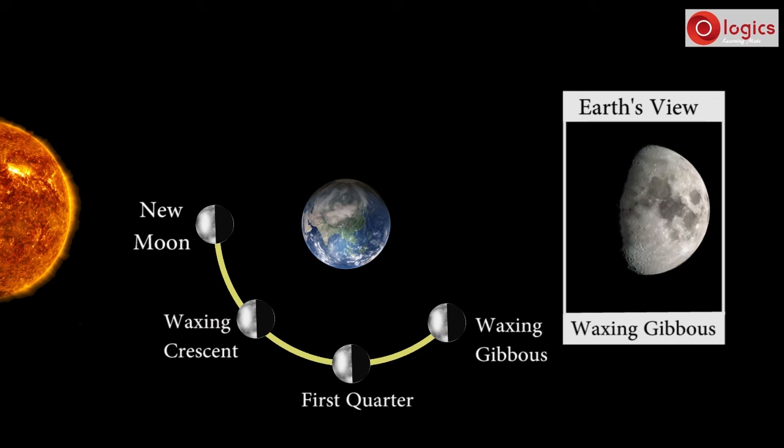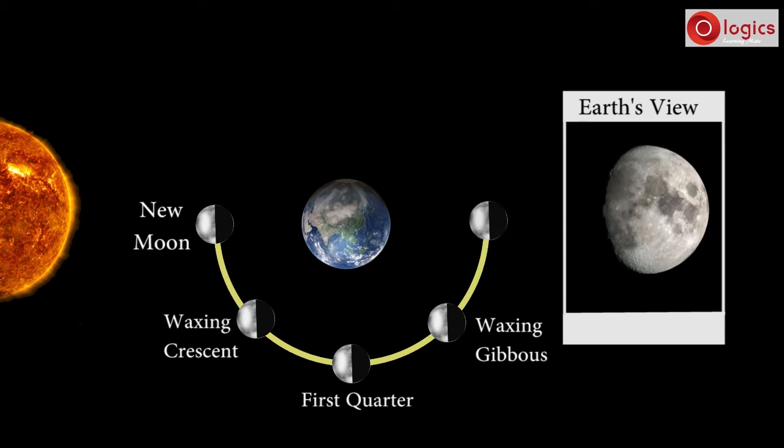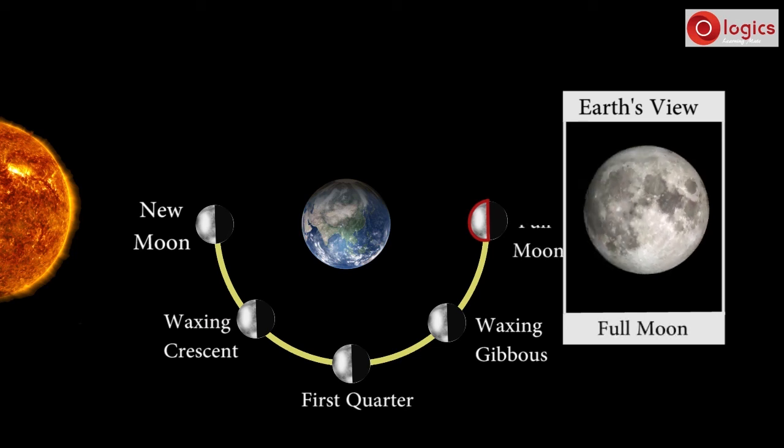Moon completes half of its journey and reaches this region. Here the complete brighter side of Moon is visible to Earth. This phase of Moon is called Full Moon, or Purnima.